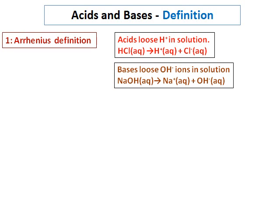Similarly, the Arrhenius definition of bases is that a base loses hydroxide ions in solution. In other words, NaOH gives you Na⁺ and OH⁻. The OH⁻ makes NaOH a base. But this definition cannot be applied to all acids and bases.